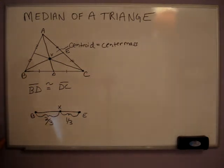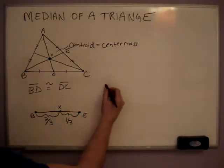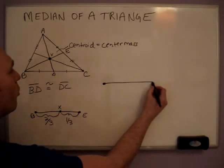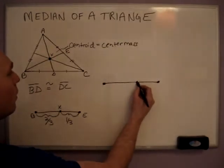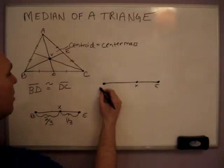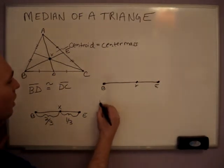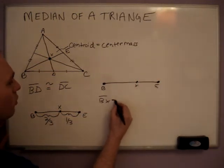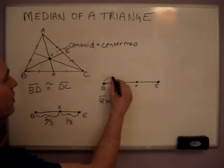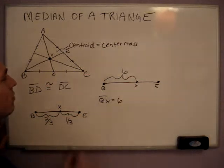So how this is going to be asked to you in a question, say we'll redraw this once more with values in it. Here's X, here's E, and here's B. And say I say, line segment BX equals six. So we know that this segment is six units long.